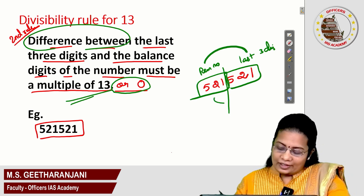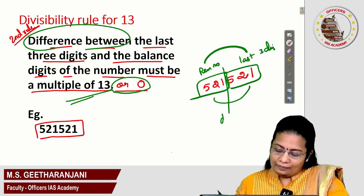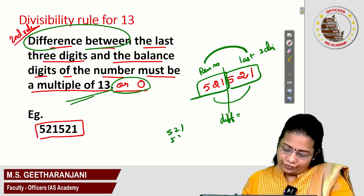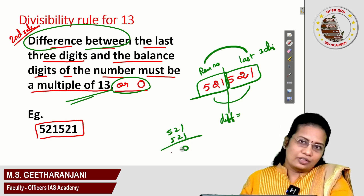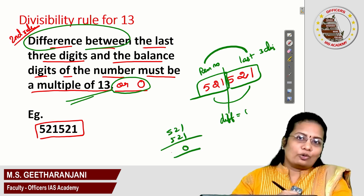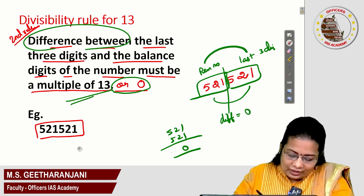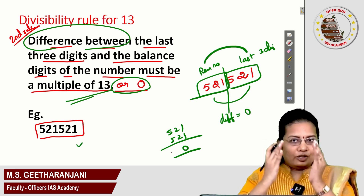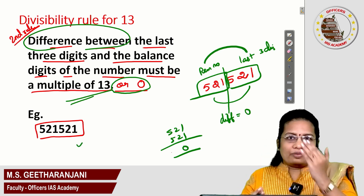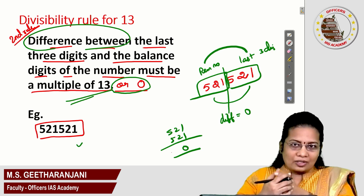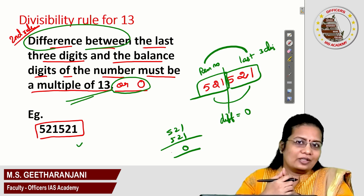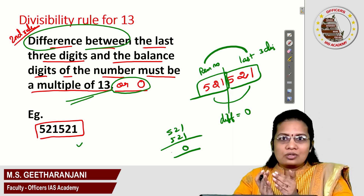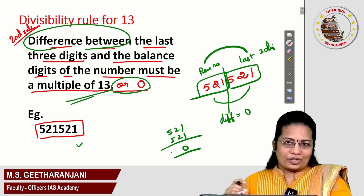Let us check the difference here. This is 521 and the other number is also 521. The difference is obviously 0. Since the difference is 0, this number is divisible by 13. Based on this concept, this question was asked in the previous year 2023 CZ. Let us see how to use this rule to crack the question.